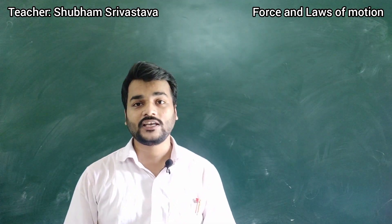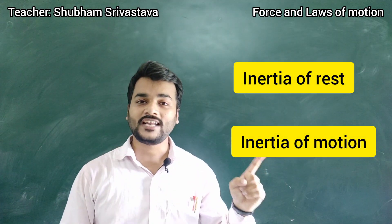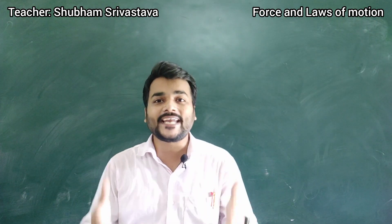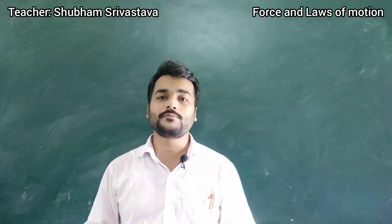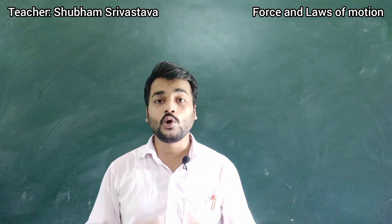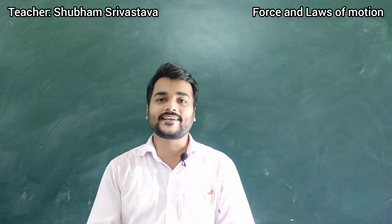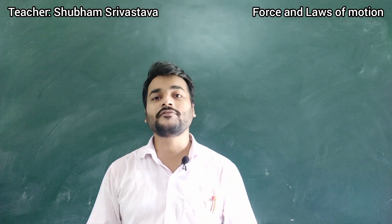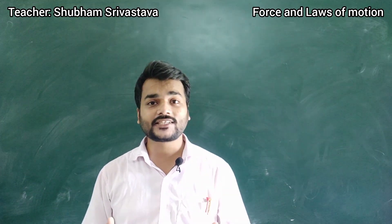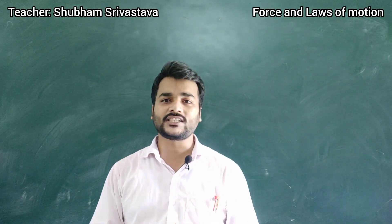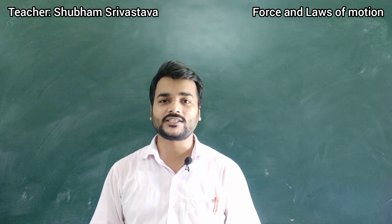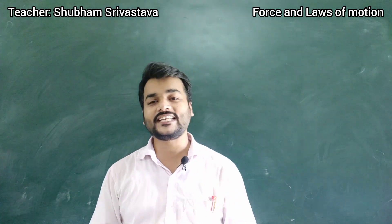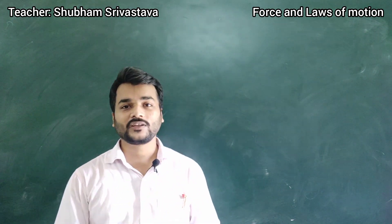Inertia is basically of three types: inertia of rest, inertia of motion, and inertia of direction. Inertia of motion means if a body is in motion it tends to stay in motion and opposes coming to rest. Inertia of rest means if a body is at rest it continues to be at rest and opposes motion. Inertia of direction means if a body is moving in a particular direction it will oppose any change in that direction.